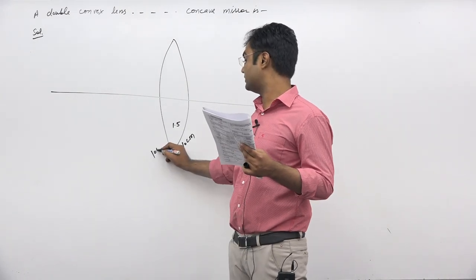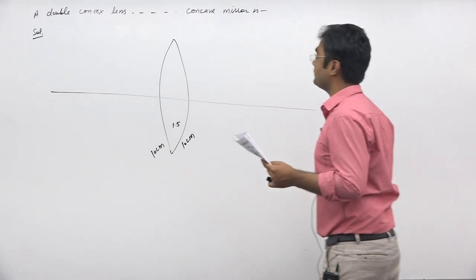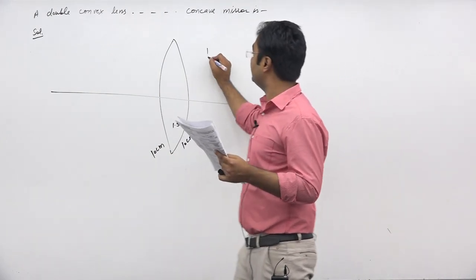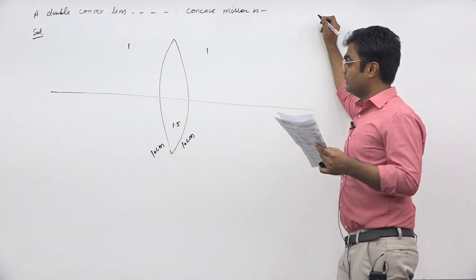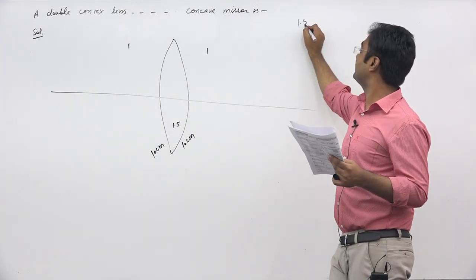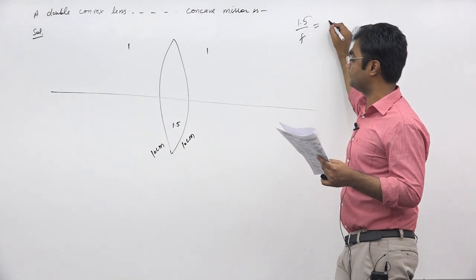r1 is 10 centimeters, r2 is 10 centimeters. For the focal length from the lens, n2 upon f is equal to n2 minus n1.